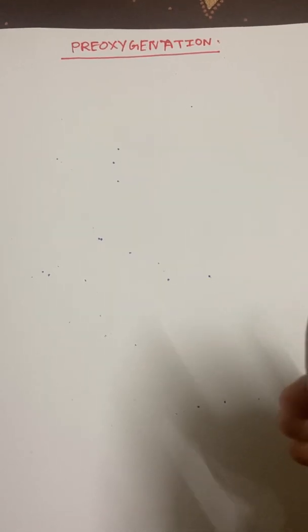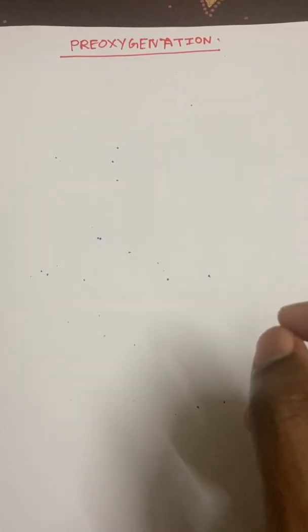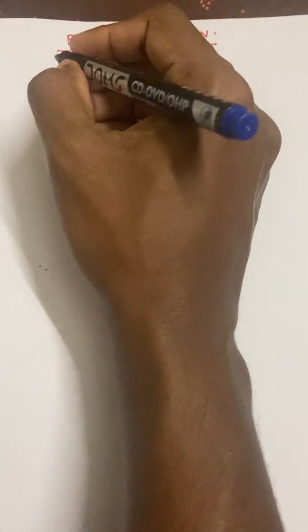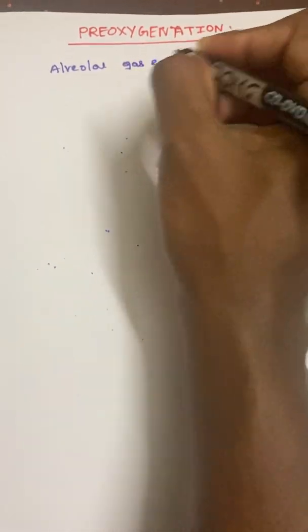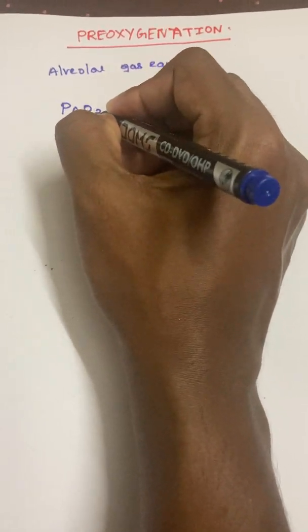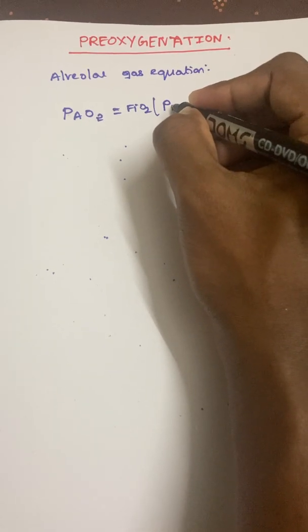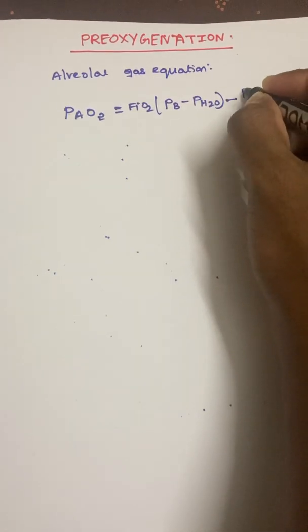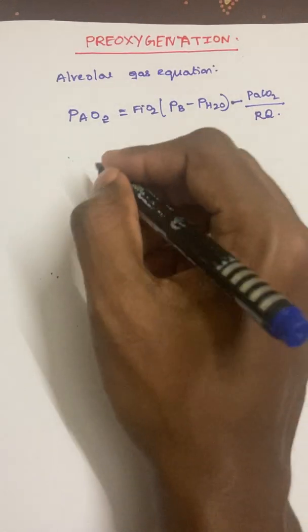It is not the same in all individuals, so we have to know in which individuals how much time is needed for effective pre-oxygenation. We will be assessing and calculating this with the help of the alveolar gas equation: PAO2 = FiO2 × (Pb − water vapor) − PaCO2 / RQ, where Pb is barometric pressure and RQ is the respiratory quotient.